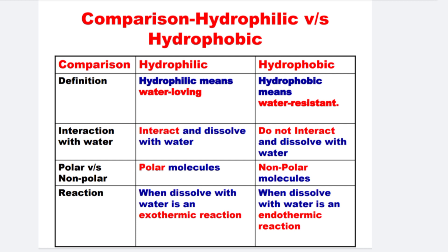Next is Polar vs Nonpolar: hydrophilic substances are polar molecules, on the other hand hydrophobic substances are nonpolar molecules. Next is Reaction: when hydrophilic molecules dissolve with water it is an exothermic reaction, and on the other hand when hydrophobic substances interact with water it is an endothermic reaction.